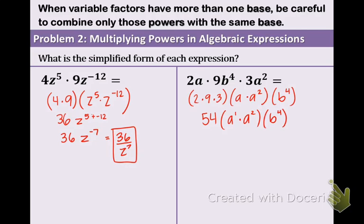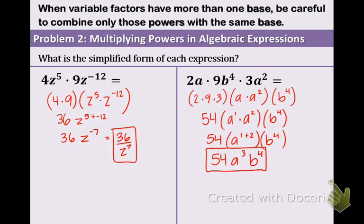Now we need to combine the a's. So using today's property, we're going to add the exponents. And now we're going to get 54a to the 3rd and b to the 4th. And we know we are done simplifying because there are no negative exponents. There's no zero exponents. And all like terms are combined.